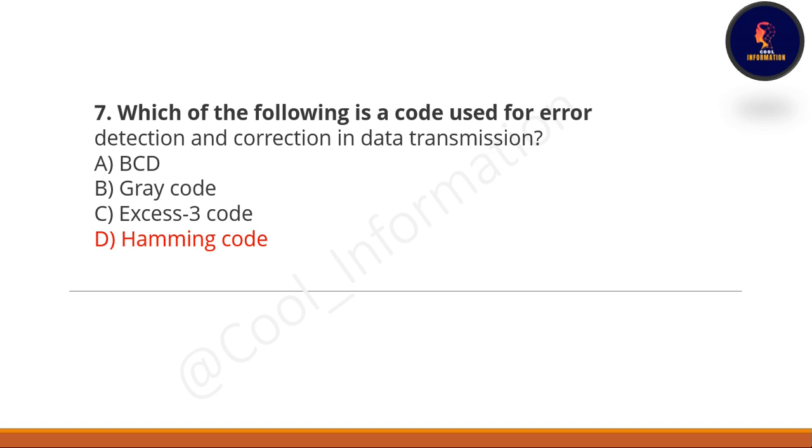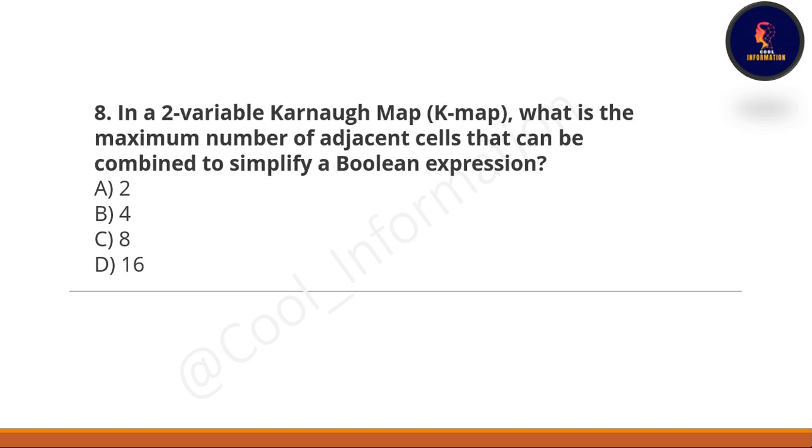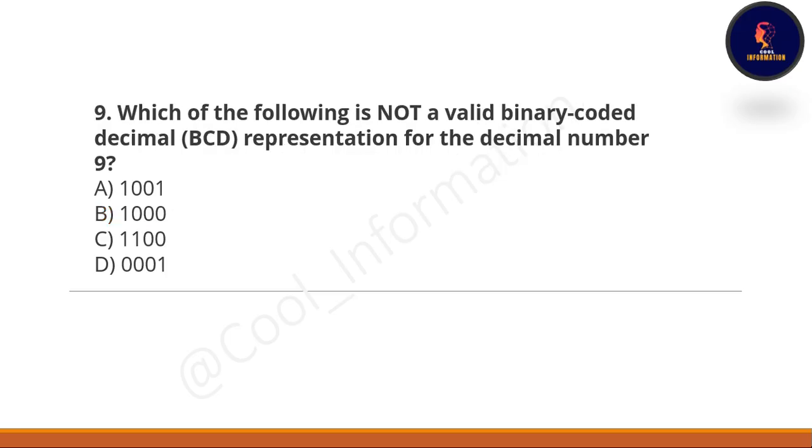Next question: In a two-variable K-map, what is the maximum number of adjacent cells that can be combined to simplify a Boolean expression? Option A: 2. Option B: 4. Option C: 8. Option D: 16. And the correct option is option number B, which is 4.